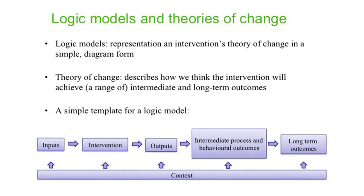Theory of change are the stages you think an intervention needs to go through to achieve its impact — what needs to happen, usually several things. Logic models are simple diagrams that represent those changes. On the slide here is an example of a very simple logic model, quite a linear one. It begins with inputs — the things needed to set up the intervention — then the intervention itself, and the immediate things the intervention produces: the outputs.